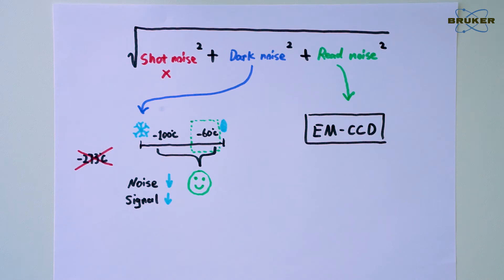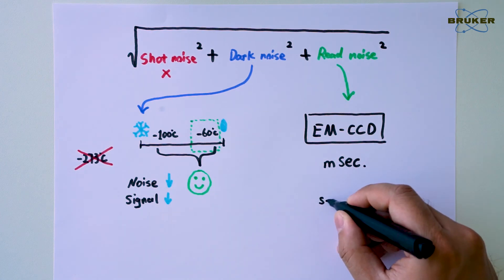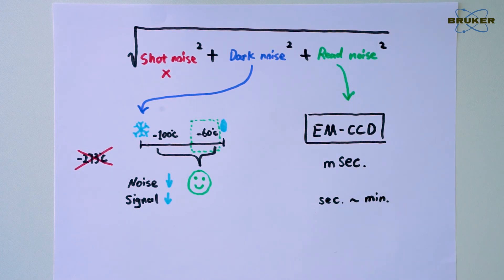But long story short, an EMCCD is particularly effective for improving signal-to-noise ratio when the exposure time lies in the millisecond range. But even an EMCCD does not miraculously change the fact that a typical Raman spectra needs seconds or even minutes of measurement.